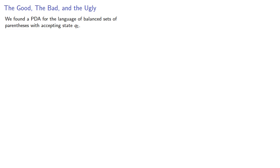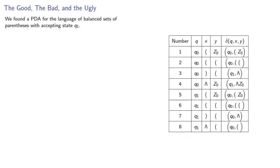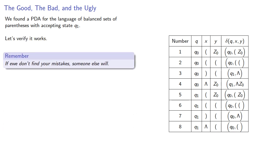We found a push-down automaton for the language of balanced sets of parentheses with accepting state q1. Let's verify it works. Remember, if you don't find your mistakes, someone else will.